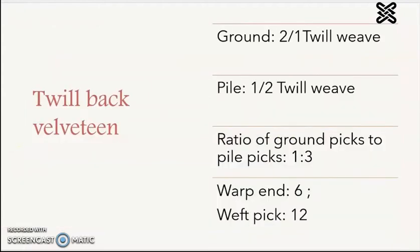Now, we will draw a twill back velveteen with the ground is 2/1 twill weave, and the pile is 1/2 twill weave. And the ratio of ground picks to pile picks also is 1 to 3. The warp end is 6, the weft pick is 12, which is much more than the one in the plain back velveteen with the same pile weave.